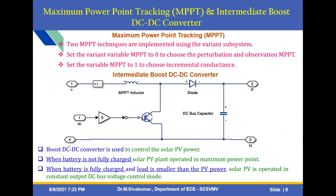Other subsystems are used for maximum power point tracking and the intermediate boost DC-to-DC converter. Two MPPT techniques are implemented using variant subsystems: setting variant variable MPPT to zero selects the P&O technique, and setting MPPT to one selects the incremental conductance (IC) technique. This is the diagram for the intermediate boost DC-to-DC converter — the MPPT converter with diodes connected to control the solar PV power. When the battery is not fully charged, the solar PV plant operates in maximum power point mode. When the battery is fully charged and the load is smaller than PV power, the solar PV operates in constant output DC bus voltage control mode.